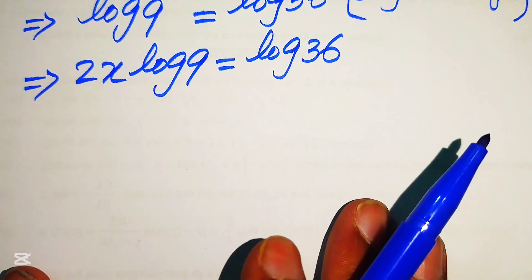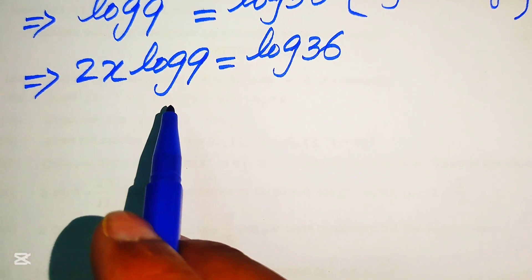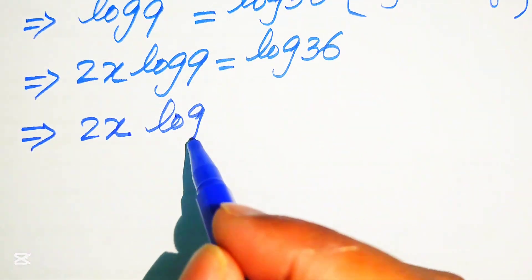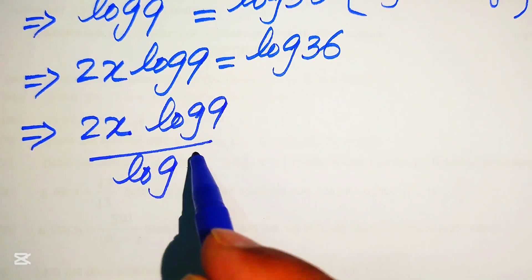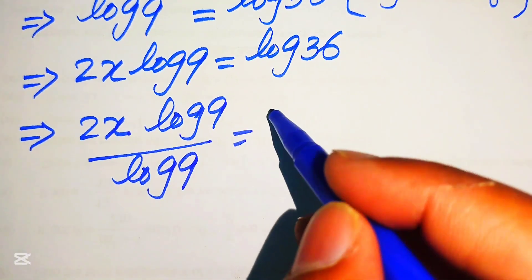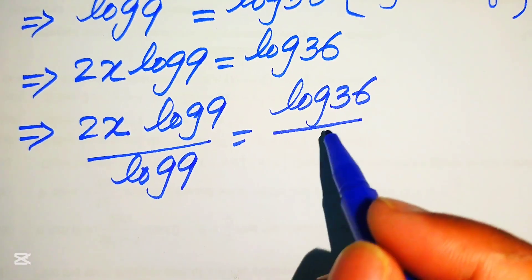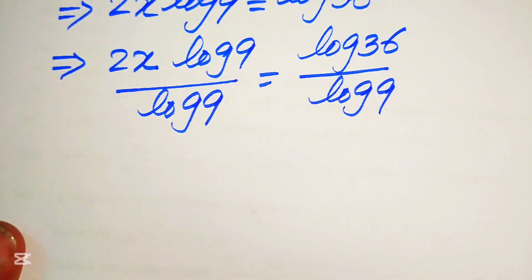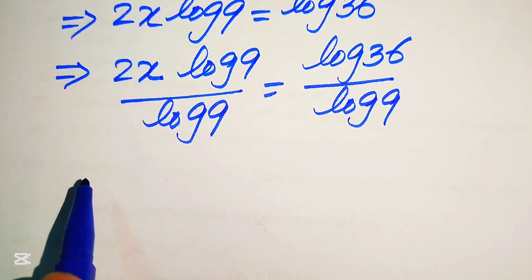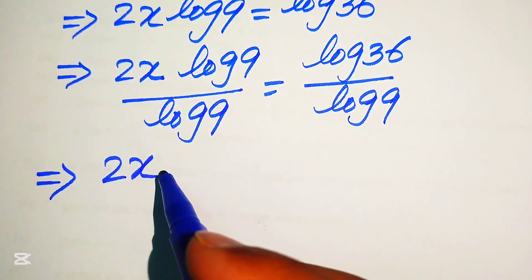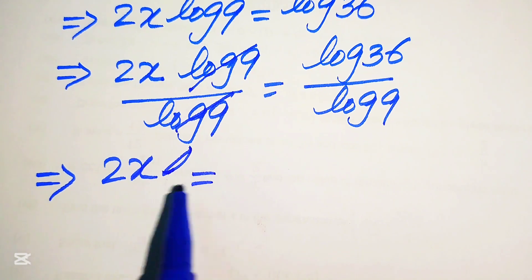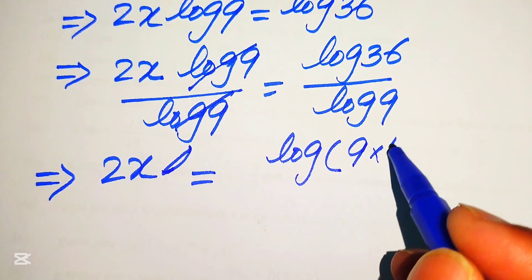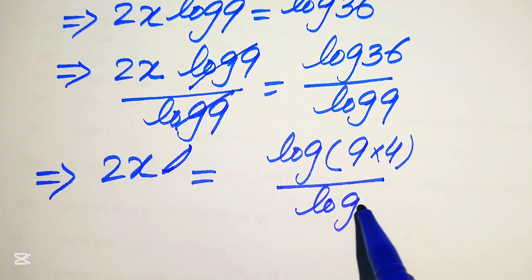In the next step, we divide both sides by log 9 in order to find the value of x. When we divide both sides by log 9, we get 2x times log 9 divided by log 9 equals log of 36 divided by log 9. The log 9 cancels out, and we get 2x equals log of 36, and we write 36 as 9 multiplied by 4, divided by log of 9.